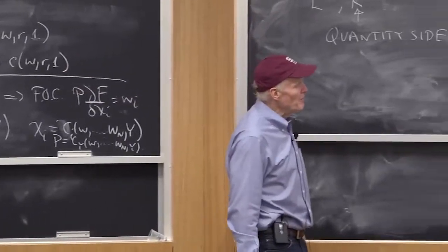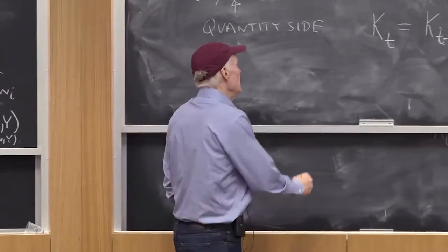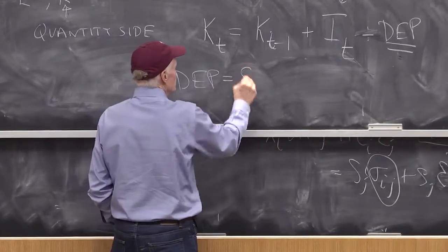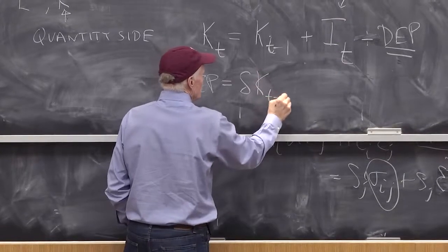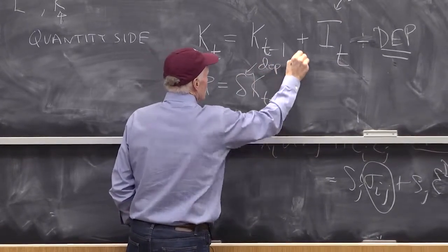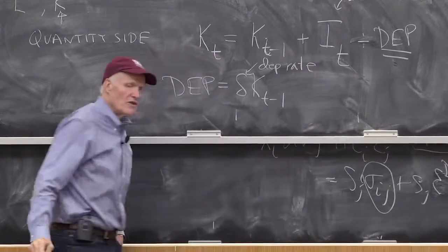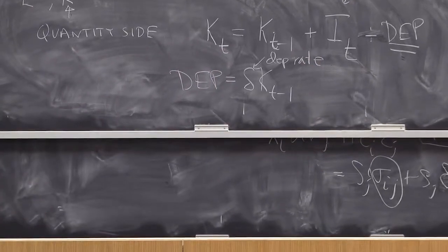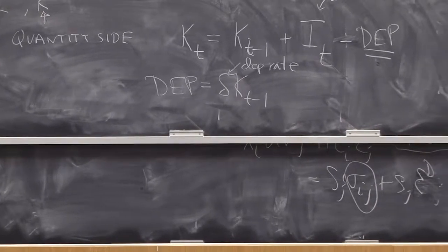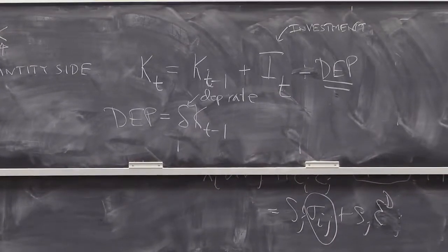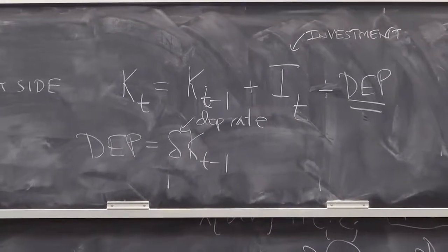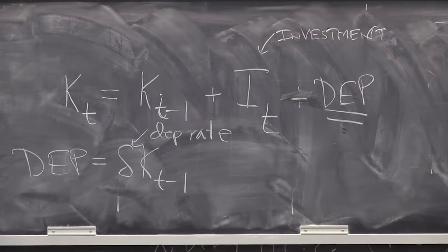The most common model we use in economics is depreciation equals delta times Kt minus 1, where delta is the depreciation rate. This is the most common model economists use to describe depreciation for a couple of reasons. First, as an empirical matter, it's not a terrible approximation for many goods.